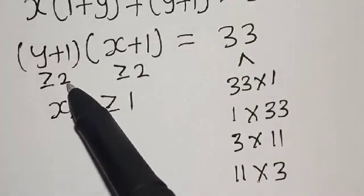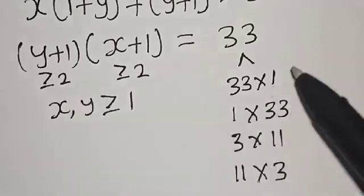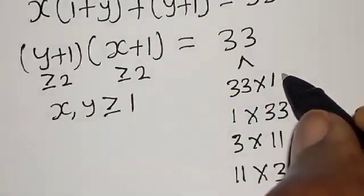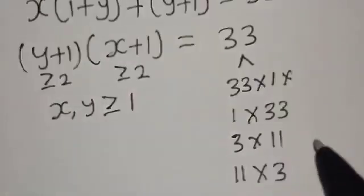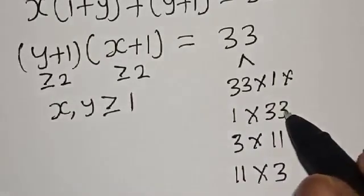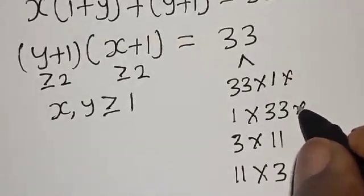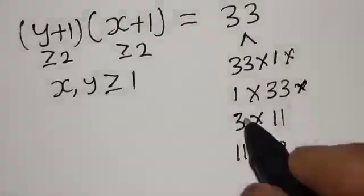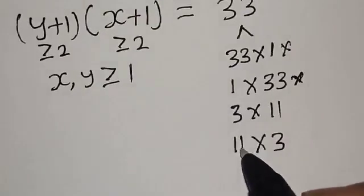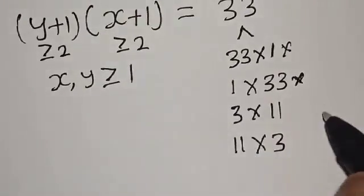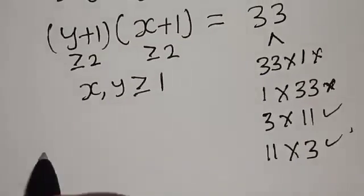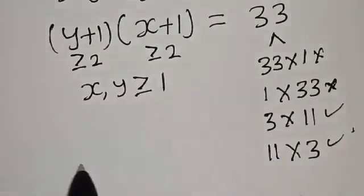Since y plus 1 is greater than or equal to 2, and 1 is less than 2, we cancel the pair 1 times 33. Also 33 times 1 is cancelled since 1 is less than 2. However, 3 is greater than 2 and 11 is greater than 2, so we accept both 3 times 11 and 11 times 3. Therefore we have two cases.